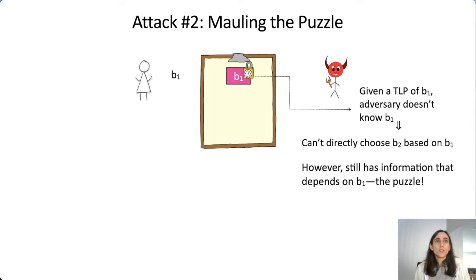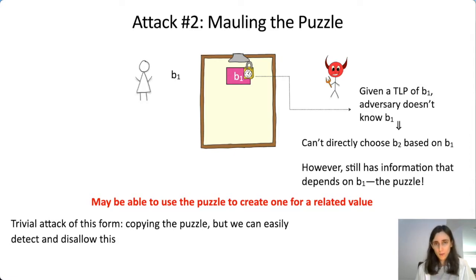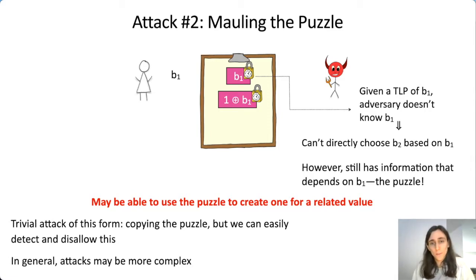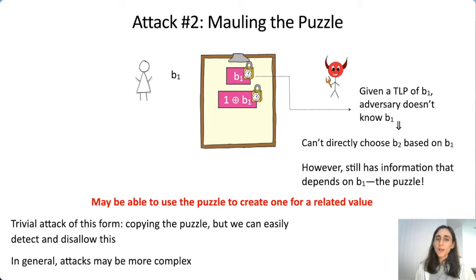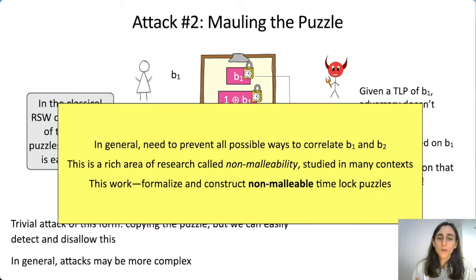The trivial attack is just copying the puzzle, which we can disallow. But in general, these attacks may be complex and arbitrary. If we look at the classical construction of time-lock puzzles, they are actually trivially malleable because the message B1 is basically part of a one-time pad. An adversary could take the puzzle of B1 and compute a puzzle to 1⊕B1 without solving it or spending time T, making the output clearly biased to 1. We need to prevent all possible ways to correlate these values—this is the area called non-malleability, and it's what we focus on in this work: formalizing and constructing non-malleable time-lock puzzles.